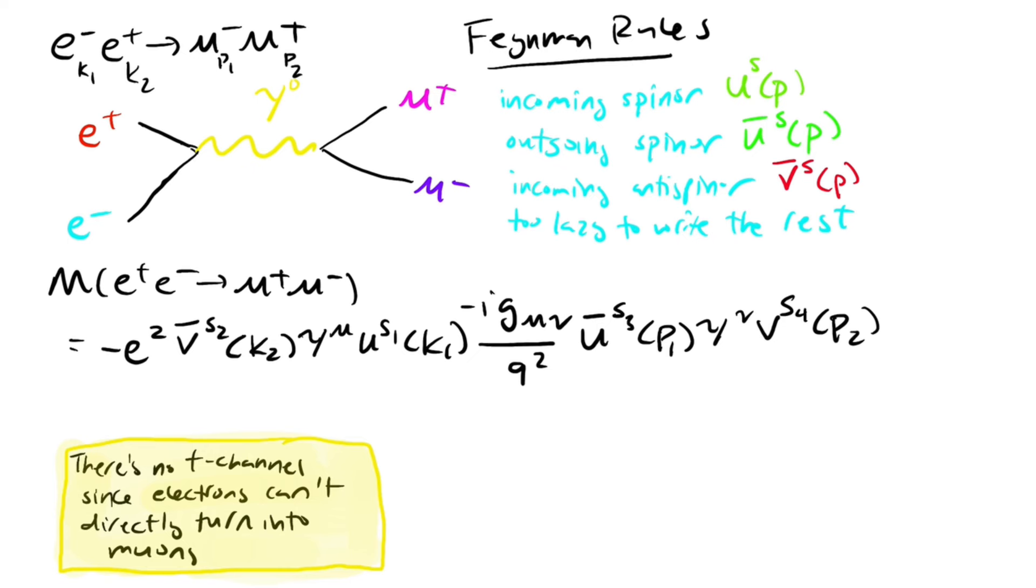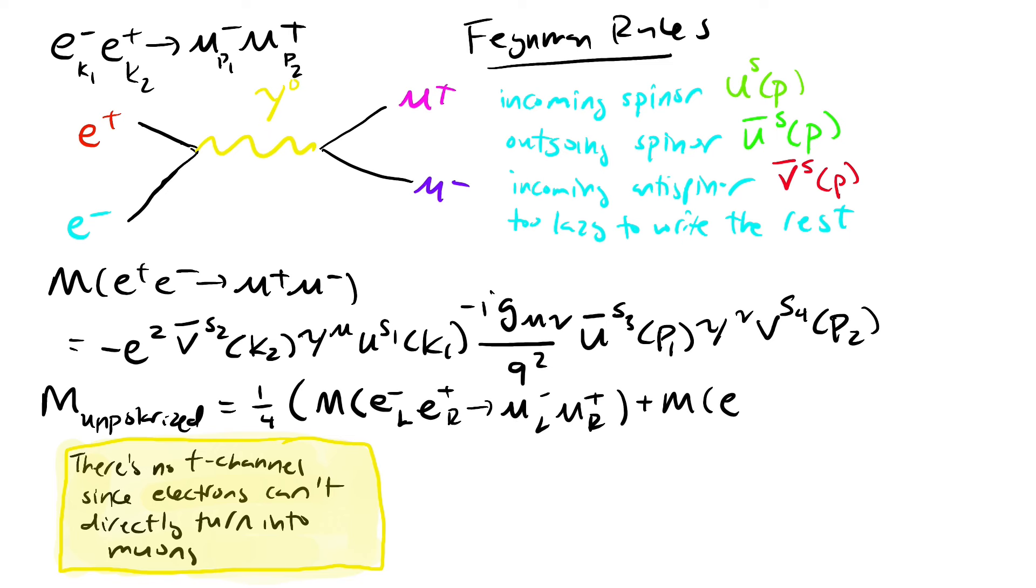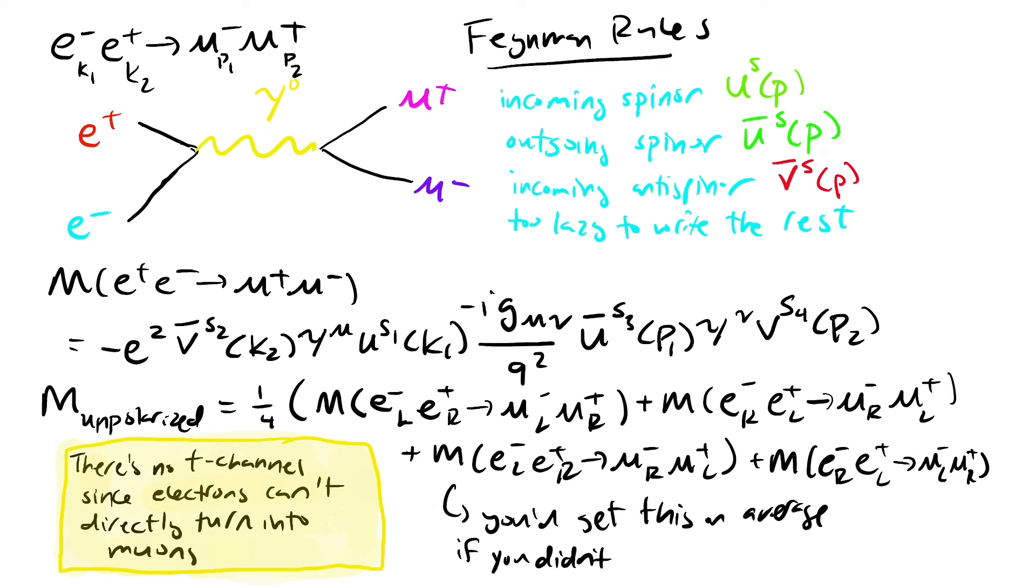If this is the case, we'd have to sum over all possible spins the incoming and outgoing particles can have, and then divide them by the number of possible spins to make an average. This is just a statistical average, not the same thing as quantum superposition. It would take a lot of work having to calculate the matrix element for each possible spin, so there has to be a better way.